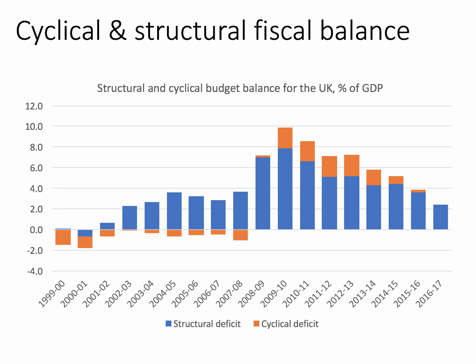However, the blue segment — the structural deficit — remains in deficit. A key evaluation point is that the British economy appears to have quite a sizeable structural fiscal deficit, currently between two and a half and three percent of GDP. That is the part of the deficit that doesn't go away once the economy has recovered. The structural deficit has fallen somewhat, partly due to government policies to limit welfare spending and increase tax take, particularly from people with second or third incomes.